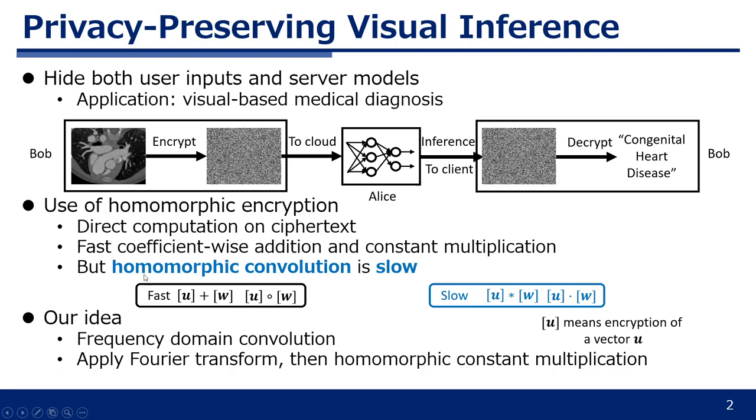In particular, we know that homomorphic convolution is a very slow process, so our idea is to use frequency domain convolution to accelerate it.